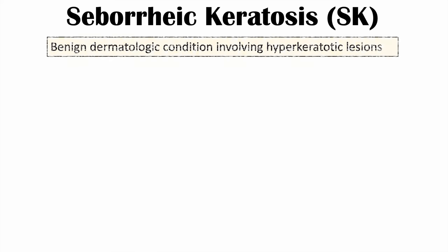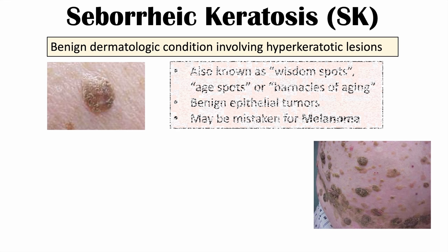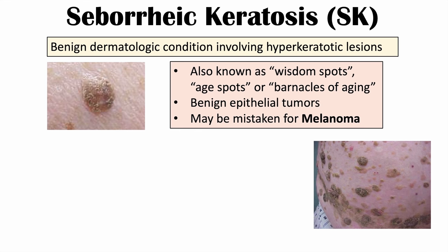Seborrheic keratosis is a benign dermatologic or skin condition involving hyperkeratotic lesions. These lesions are also known as wisdom spots, age spots, or barnacles of aging, and they are actually benign epithelial tumors. They can often be mistaken for melanoma, as they have certain characteristics in common with melanoma and by appearance can look quite concerning.